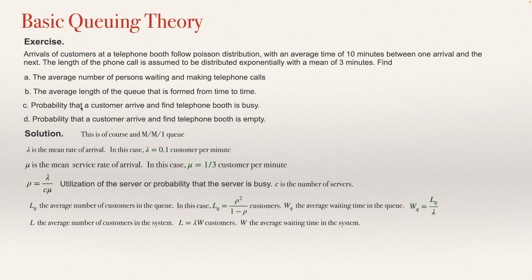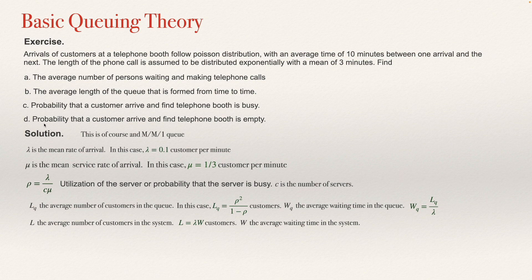The questions are given in a different order than we are going to answer them. We can immediately find the probability that the customer arrives and finds the telephone booth busy using the rho formula with C equals 1 and lambda divided by mu. After that, we can immediately find question D — the probability the booth is empty — as 1 minus rho. Then, when we have rho, we can answer question B using the LQ formula. Finally, question A uses the average waiting time.